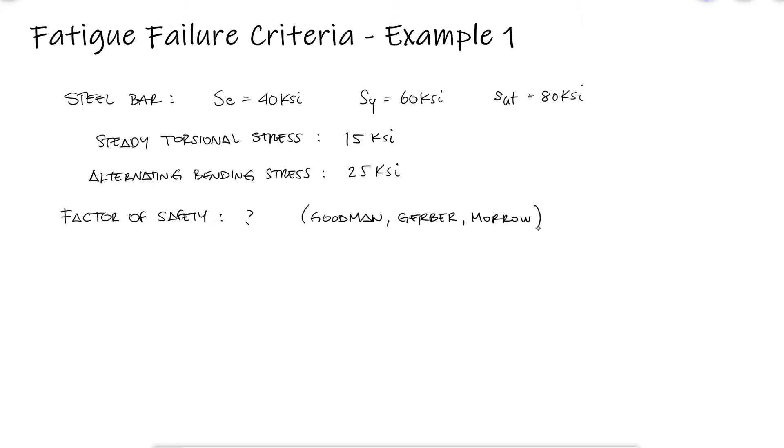This is the first example for the fatigue failure criteria main video, link below. Since we have already solved many other problems where we find the endurance limit using the SE' estimate and the Marin factors, we're not going to find the endurance limit. We assume it's already been found. And since we've also solved many problems where we calculate the maximum stresses based on the given loads, even using fatigue stress concentration factors, we'll assume we've already calculated those torsional stresses and bending stresses. If you want to check all the examples related to that, the links are in the description of this video. Here, we are tasked with calculating the factor of safety using three different fatigue failure criteria.